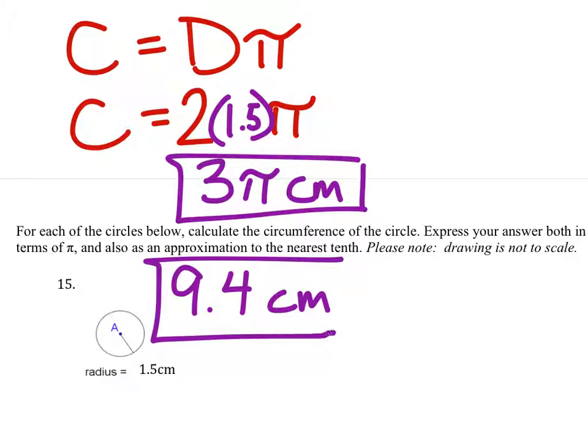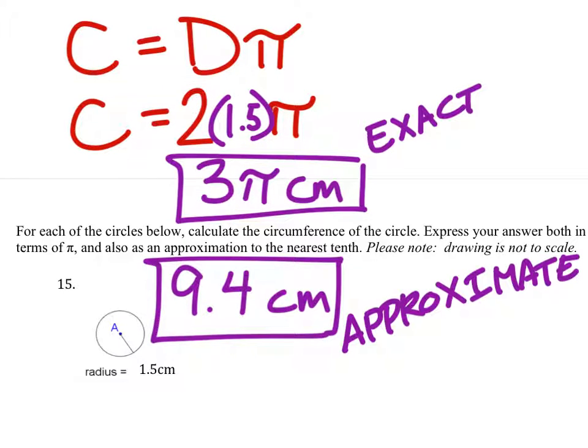In centimeters? And there are our two answers. So there's our exact and approximation. Yeah, the approximation, you guys will get more decimals because pi is an irrational number. But it did say specifically round to the nearest tenth there.